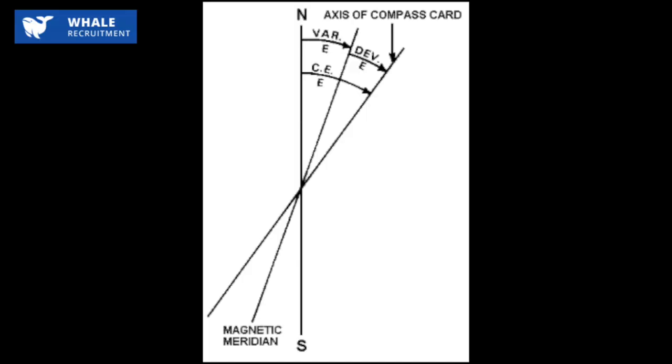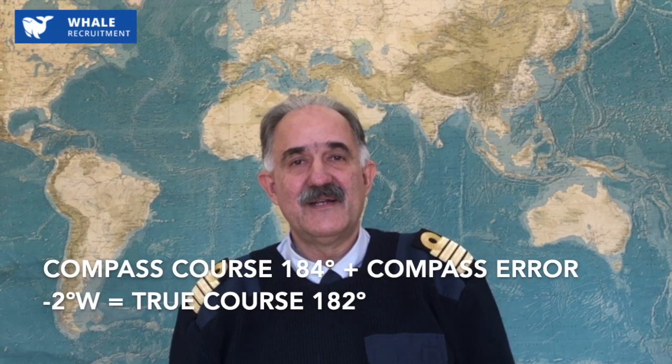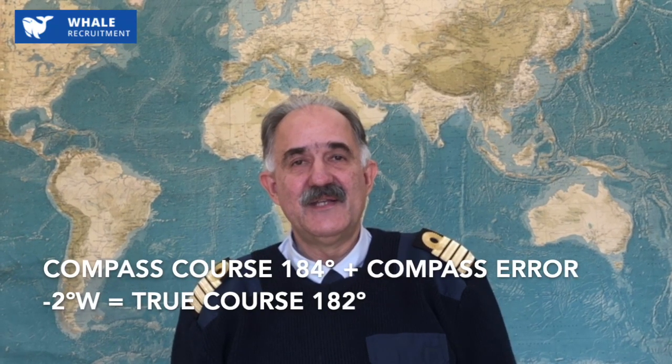This is the value you have to add to your compass course, and finally you will have your true course as 182 degrees. Just remember that deviation, variation, and compass error are negative when going to west and positive when going to east.